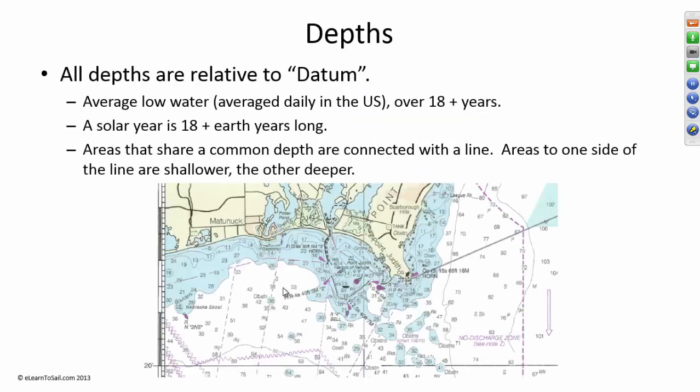We're going to start with depths. All depths are relative to datum. Datum is the average low water over 18, a little bit more than 18, 18 and a half years. Now why 18 and a half years? It seems like a really weird number.